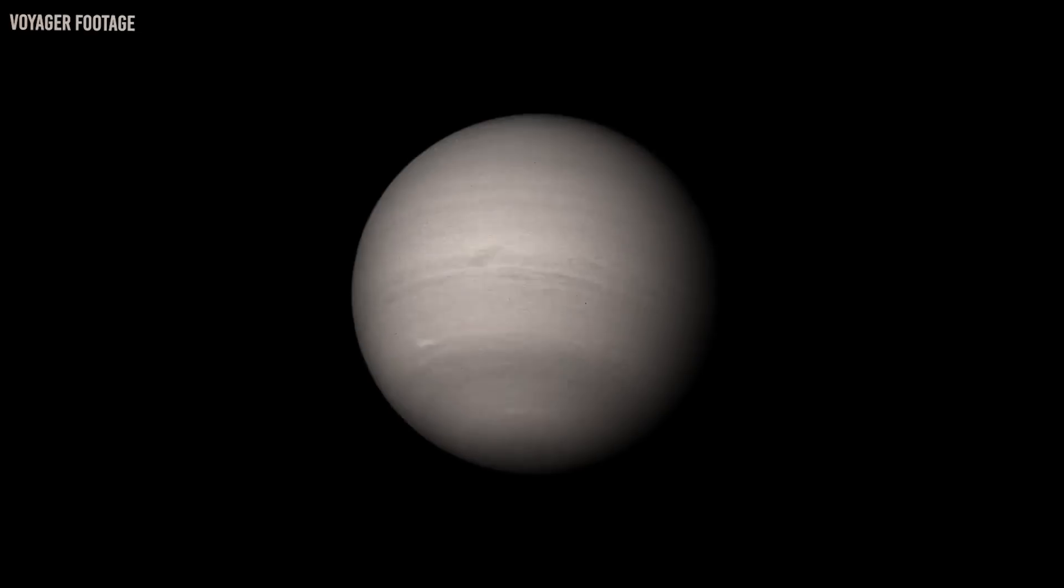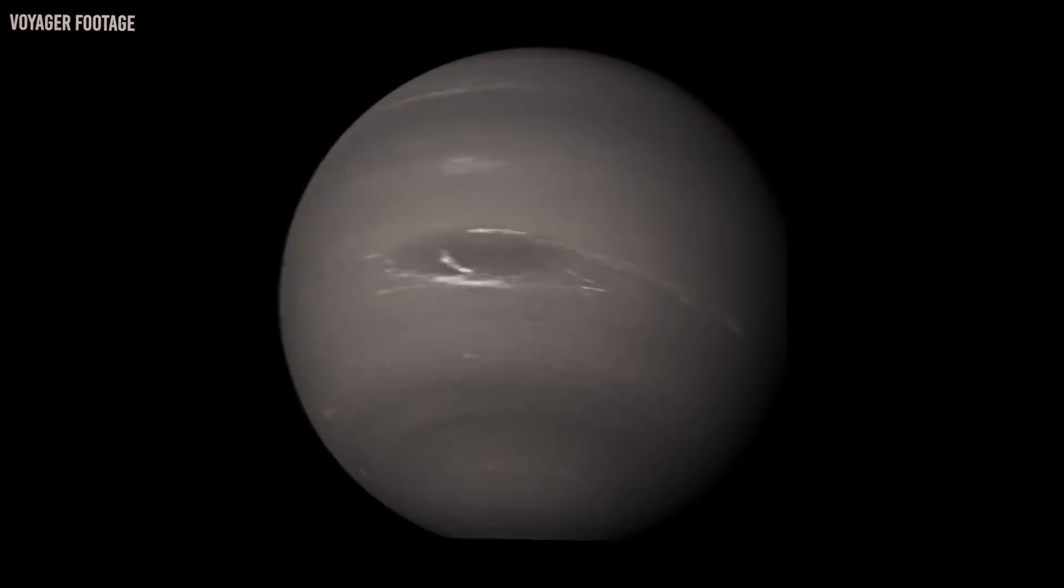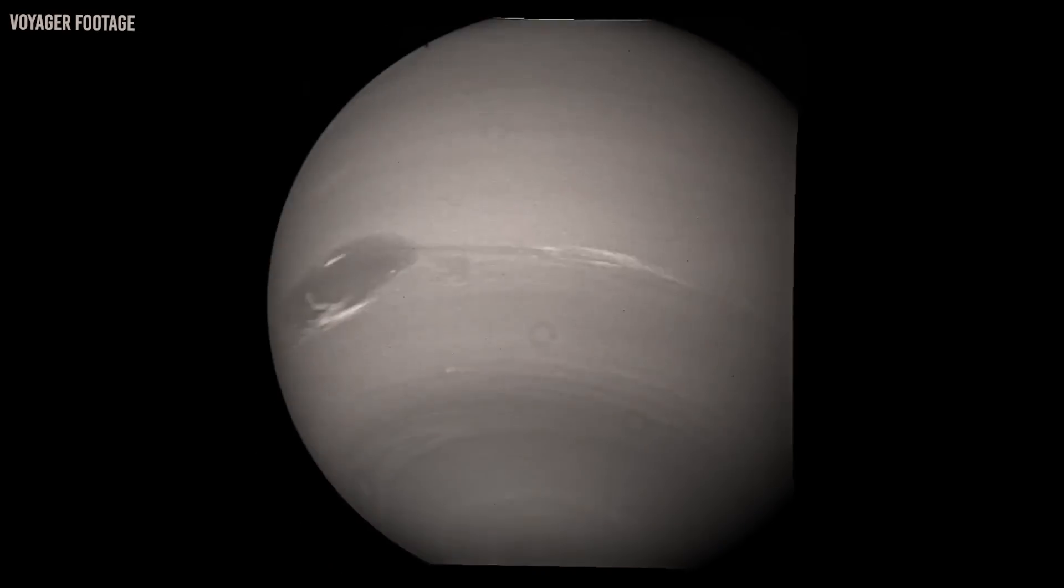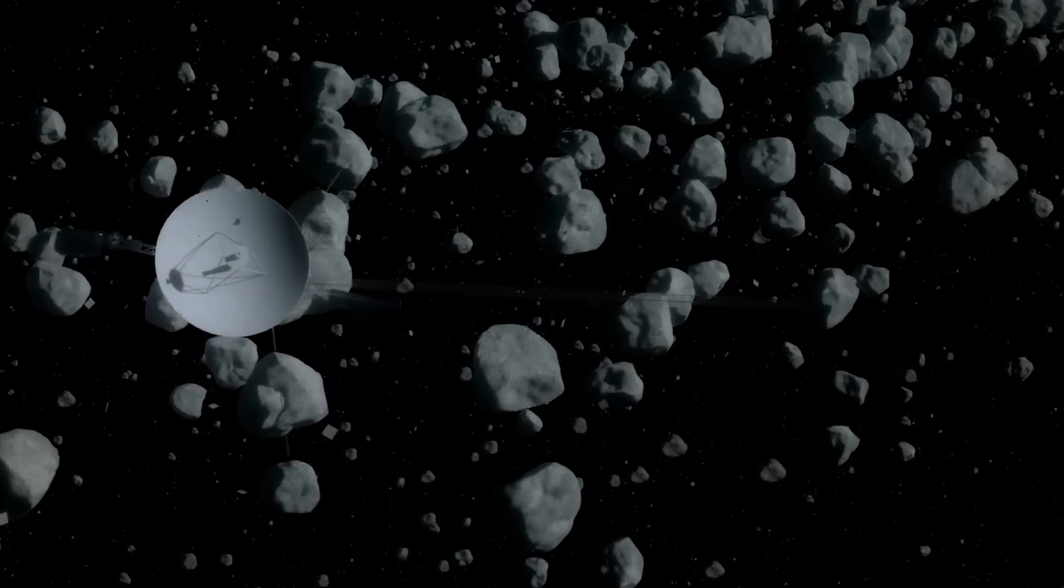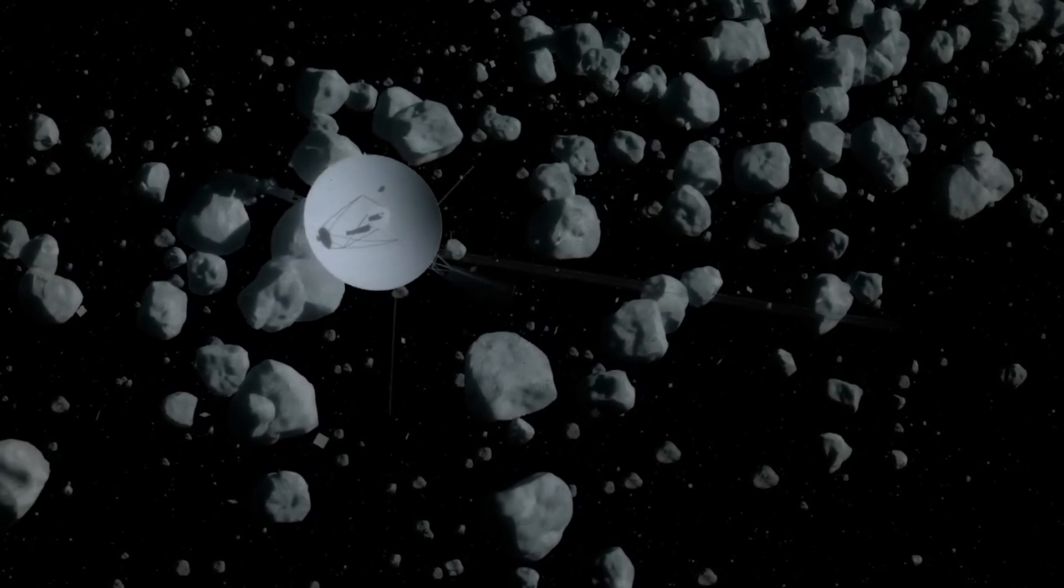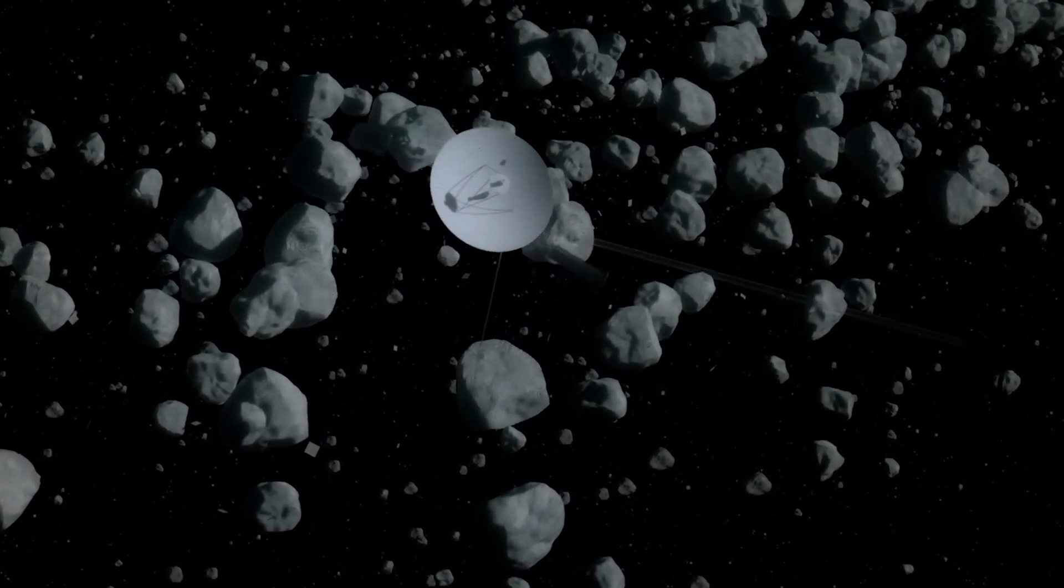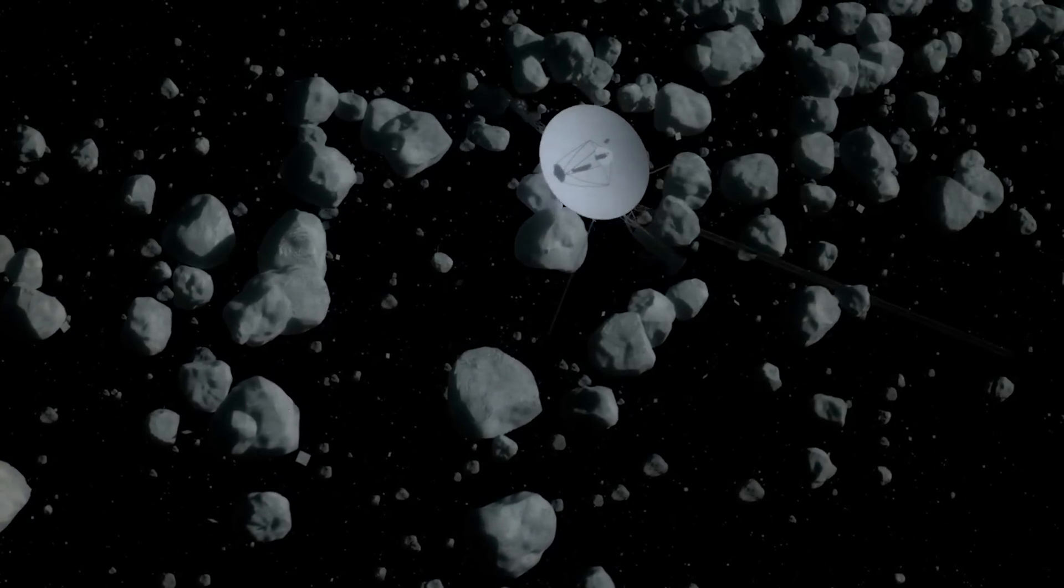Then came the Voyager interstellar mission, which aimed to go even farther and explore the edge of the Sun's influence and beyond. Voyager 1 and Voyager 2 have now traveled 22 billion kilometers and 18 billion kilometers from Earth, respectively. They have traveled so far that they have left the area influenced by the Sun and entered the space between stars.